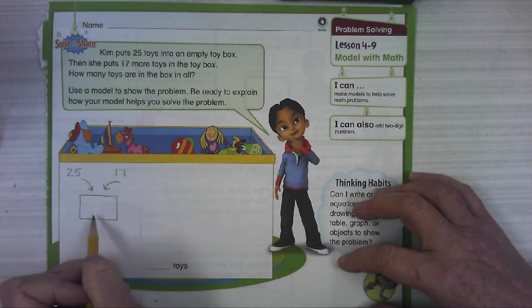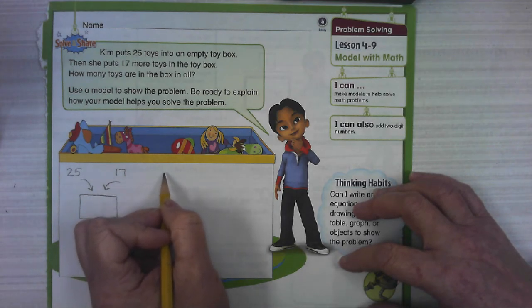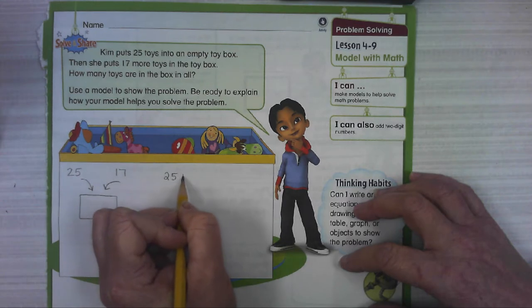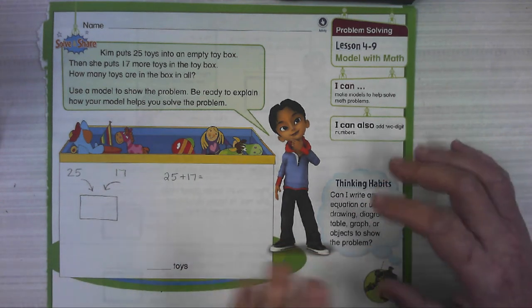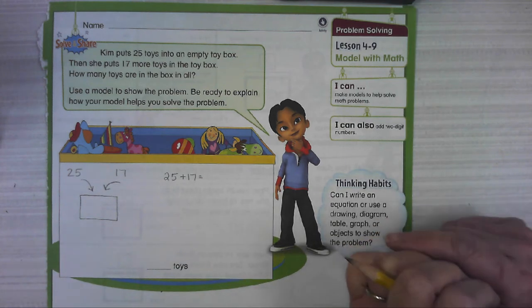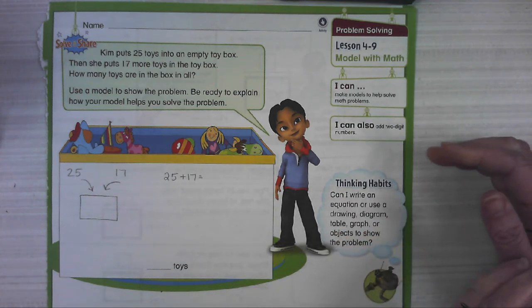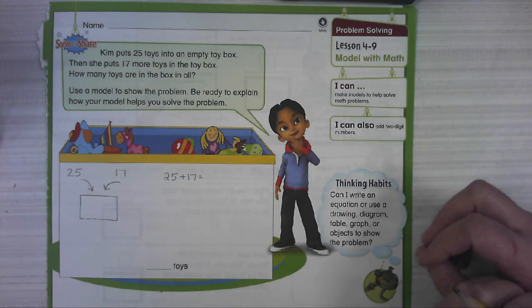Well we need to add that. Do you see that we're putting them all together? We're combining. So 25 plus 17. We've learned so many different ways to solve this problem. If you'd like to pause the video and work it yourself and then see if your answer matches mine, that would be a great idea.